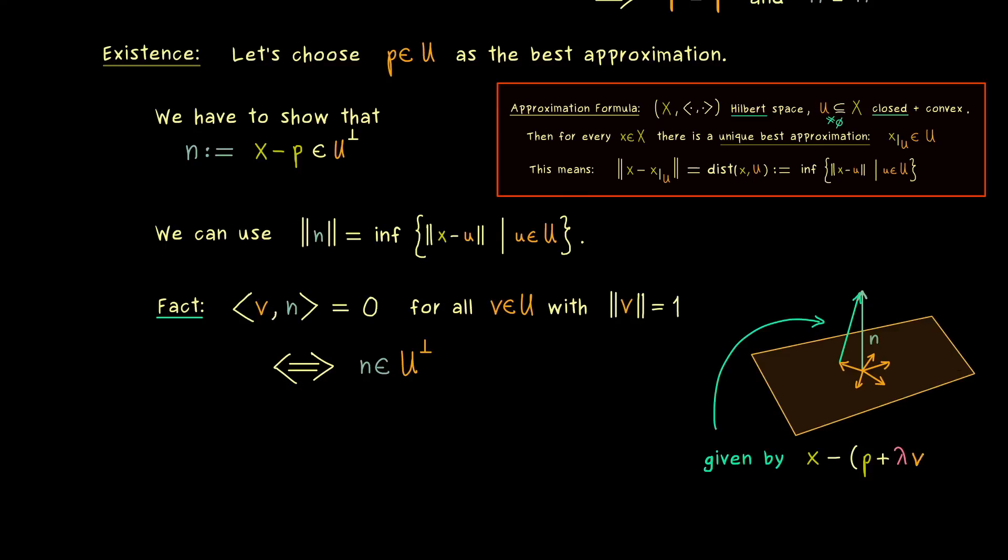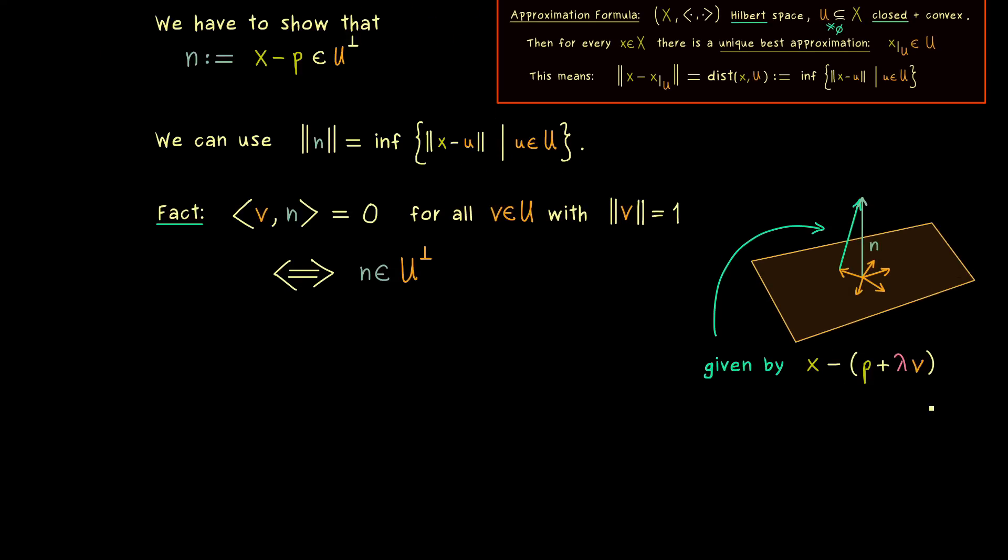So this one we can write as p plus running in any direction v inside U. And let's say this vector v we scale with any lambda from our field. In other words, this is just saying that any u in our subspace can be written in this form. Ok, and at this point we can finally use that the length of this vector here is definitely larger than the length of our vector n.